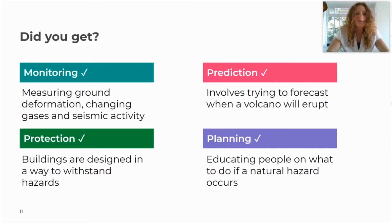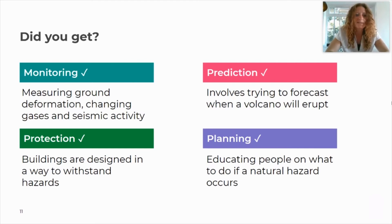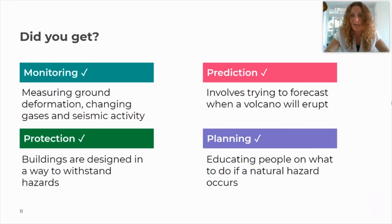Here are the answers: monitoring is measuring ground deformation, changing gases, and seismic activity; prediction involves trying to forecast when a volcano will erupt; protection means buildings are designed to withstand hazards; planning means educating people on what to do if a natural hazard occurs. Give yourself a tick for each correct answer — then let's start the main task, the last main task over the course of all these sessions.